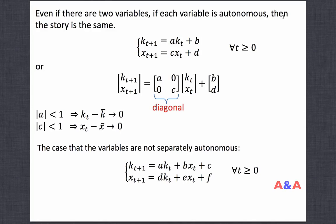In our first class, I showed a very trivial multidimensional dynamical system in which there are two variables, k and x, but k depends only on its past value and x_{t+1} depends only on its own past value. There are two variables, k and x, but they do not depend on each other.